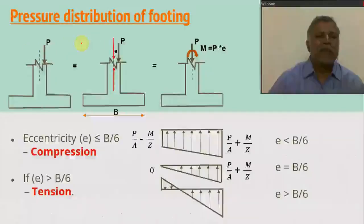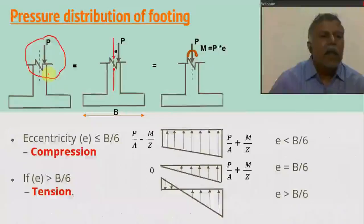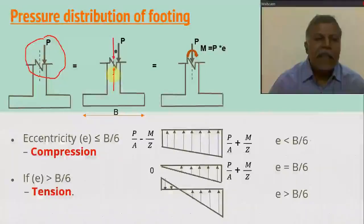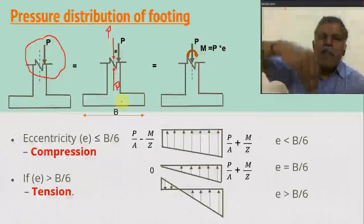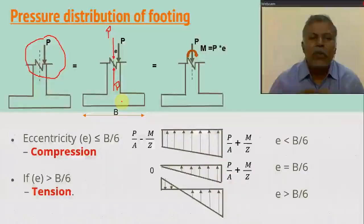Let us discuss the pressure distribution of footing. Here I am applying the load not through the CG — it is some distance from the CG. I am assuming two loads: one acting as a downward load and one acting as an upward load, both with magnitude P. The equilibrium will not be affected because the net effect is zero.